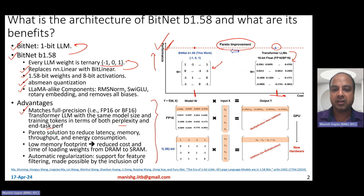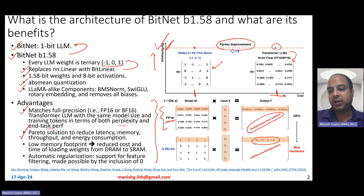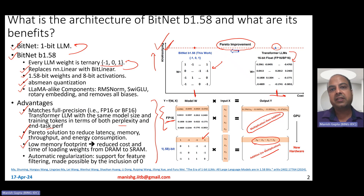It's a Pareto solution to reduce latency, memory, throughput, and energy consumption. What it does is convert matrix multiplication and addition operations — typical in FP16 weight formats — to almost pure addition operations. There's almost no multiplication required because weights are expressed as just minus one, zero, or plus one. Low memory footprint also means reduced cost in loading weights from DRAM to SRAM, therefore improving latency further.